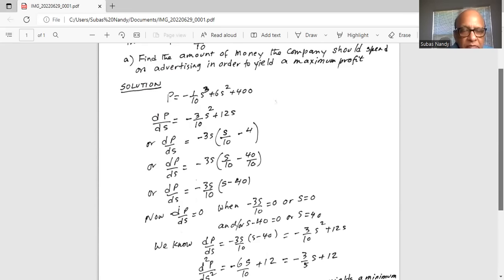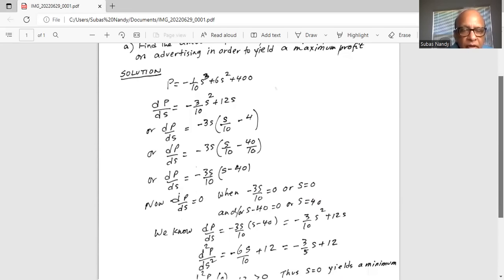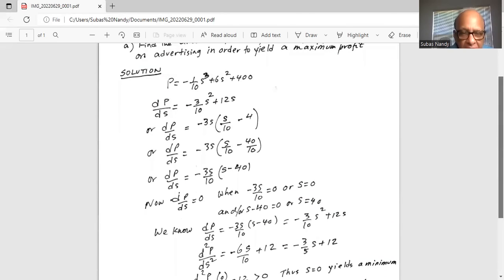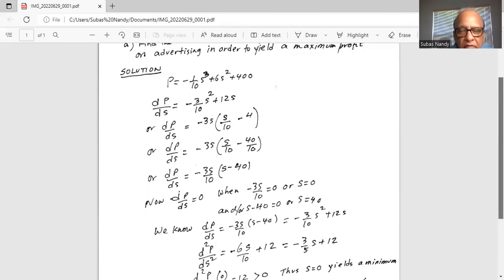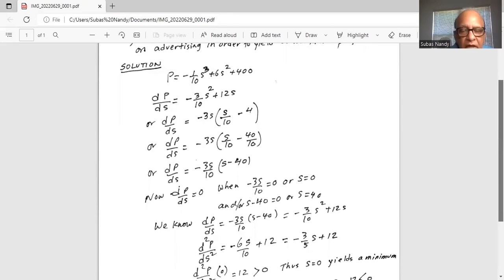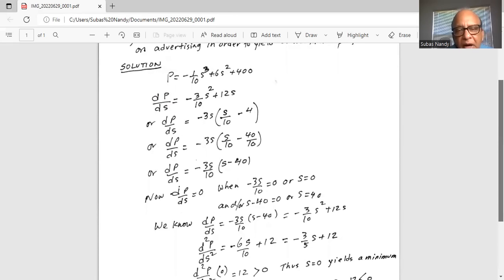So derivative of p with respect to s is 0 when minus 3s over 10 equal to 0 which gives s is equal to 0, or s minus 40 is equal to 0 which gives s equal to 40.